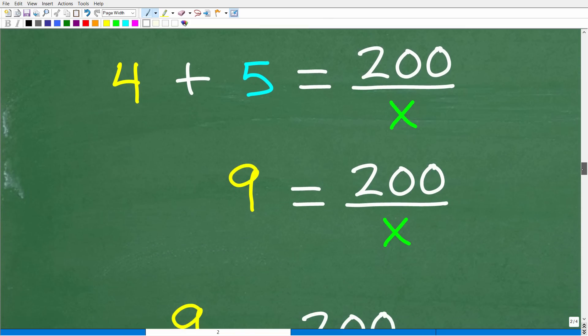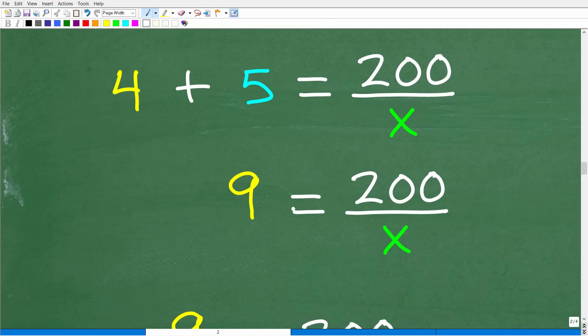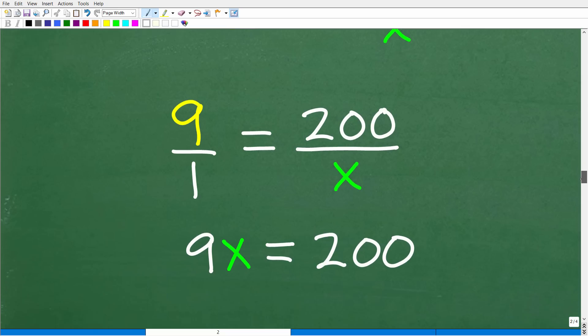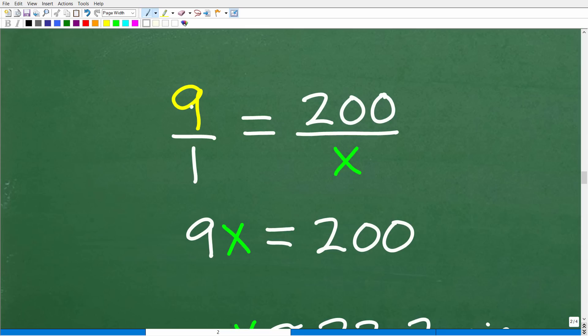So now let's go ahead and continue on. So 4 plus 5 is 9. So now our equation is 9 is equal to 200 over X. So we can think of this as a proportion, two equal fractions. We'll just put this over 1.